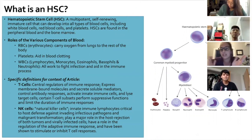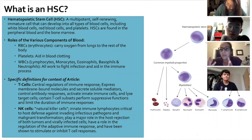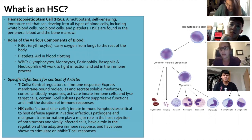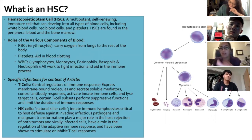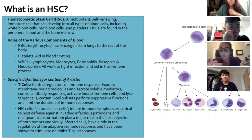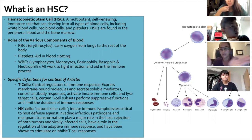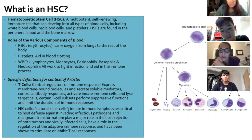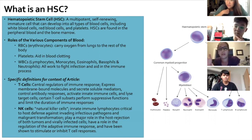An HSC is a hematopoietic stem cell — a multipotent immature cell that develops into all types of blood cells. From an HSC, you go into myeloid or lymphoid progenitor cells. Myeloid progenitor cells produce red blood cells, platelets, and myeloleukocytes like basophils, neutrophils, eosinophils, and monocytes. Then you have your lymphoid compartment, which includes B cells and T cells.